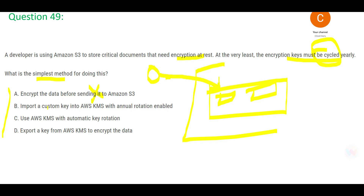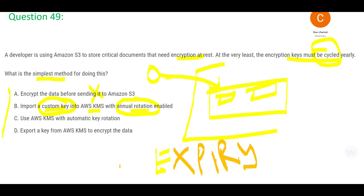Option B says: import a custom key. If you have KMS, it has its own feature to generate keys, but here you would import a custom key from outside. While importing, you could set annual rotation — but remember: when you import key material into KMS, you do NOT have an option to set rotation. You can only set an expiry time. You cannot set rotation on imported keys — only expiry. So B is wrong.